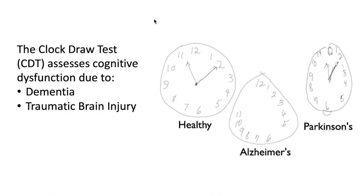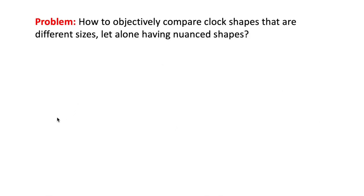This test can be done simply by asking the patient to draw a clock showing 10 minutes past 11 on a piece of paper. A problem with using the clock draw test is how to objectively compare clock shapes that are different sizes, let alone having nuanced shapes. This subjectivity in scoring the clock draw test has been a major hindrance in its widespread use and its use in conjunction with machine learning and AI.